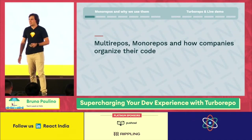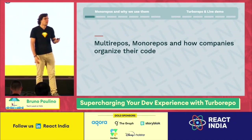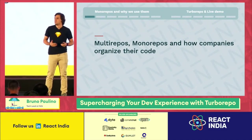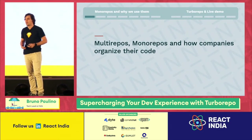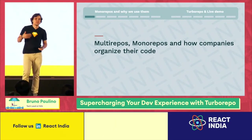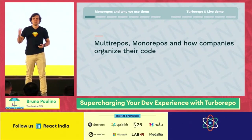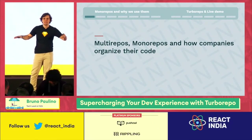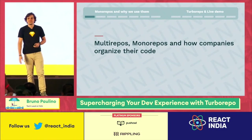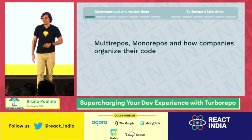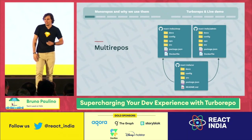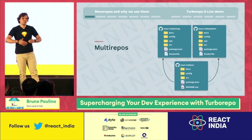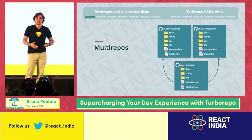Before I talk about TurboRepo, I want to talk about how companies organize their codebase. There are a few approaches, and you're probably familiar with some of them. I want to talk about multi-repos and mono-repos. In large companies specifically, the most common one is to go through this process of having separate repositories. You have your GitHub account, you have several repos there, and then teams work separately.